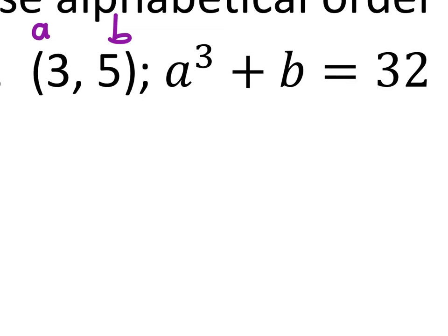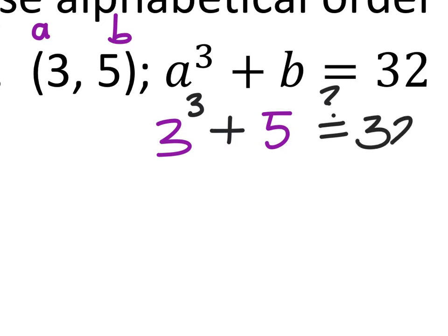So I have my A value, which is 3, so I've replaced A with 3. We're going to cube that, and we're going to add it to the B value, which is 5. And we're just going to see if it does equal 32.